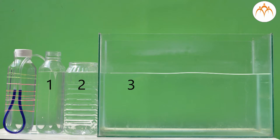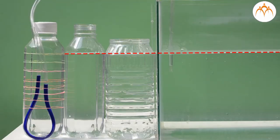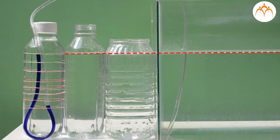These three containers are different in shape and volume. Only thing which is same is the level of water. Now let us lower the tube to the bottom of each container. Will the level of water in the tube be same for all?